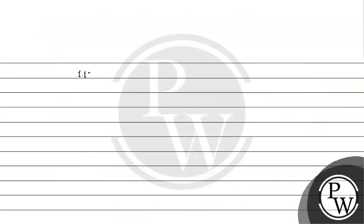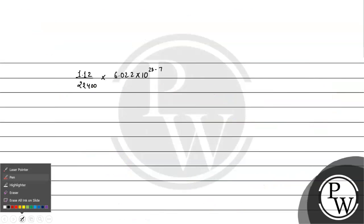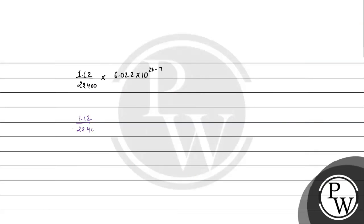1.12 by 22,400 into 6.022 into 10 raised to 23 minus 7. 23 minus 7 will be how much? 23 minus 7, see here basically we have 16. Now 1.12 multiplied by 100 we have to multiply in the denominator both.